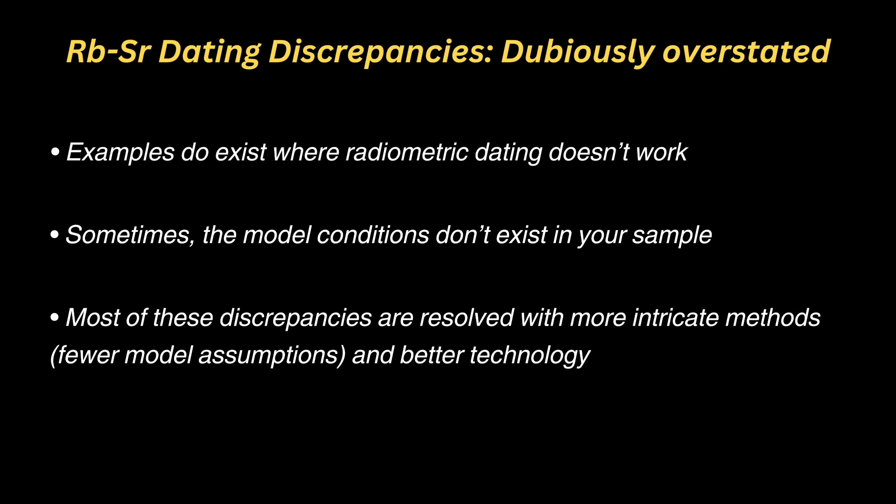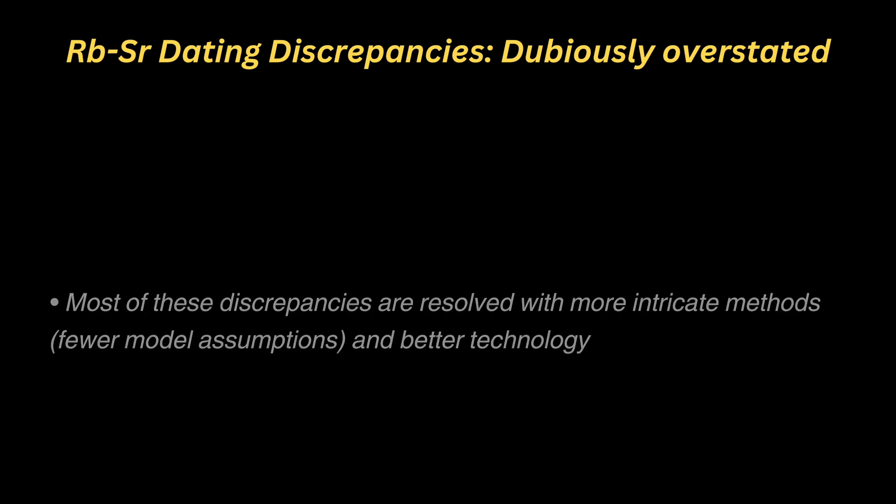Now we can acknowledge that there are plenty of examples where radiometric dating didn't work, meaning there was a discrepancy in ages from one method to another. This is to be expected because radiometric dating is a model of ideal conditions and nature is messy, so we should expect it not to work sometimes. That being said, most discrepancies are resolved by using updated methods that reduce the number of model assumptions, such as the argon-argon step heating isochron method as opposed to conventional potassium-argon dating, and also commonly by the giant leap forward in technology since 70 years ago.